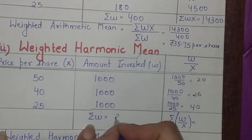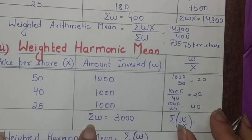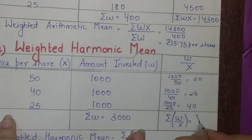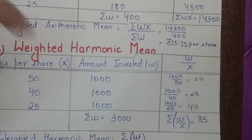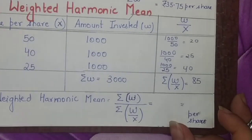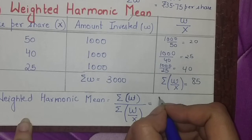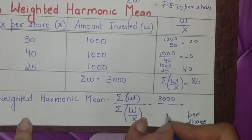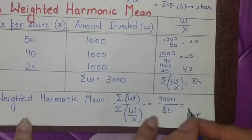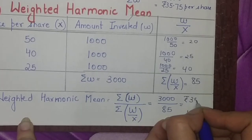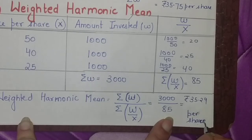Sigma of W is 3000 rupees he has invested in total, and sigma W by X will become 20 plus 25 plus 40, which is 85. Now the formula for weighted arithmetic mean is sigma W, which is 3000 in the numerator, and sigma of W by X, which is 85. So what is the average price he paid per share? It is 35.29 rupees per share.